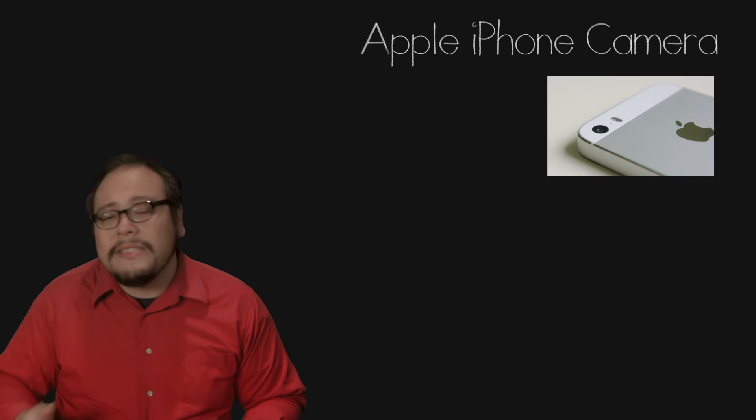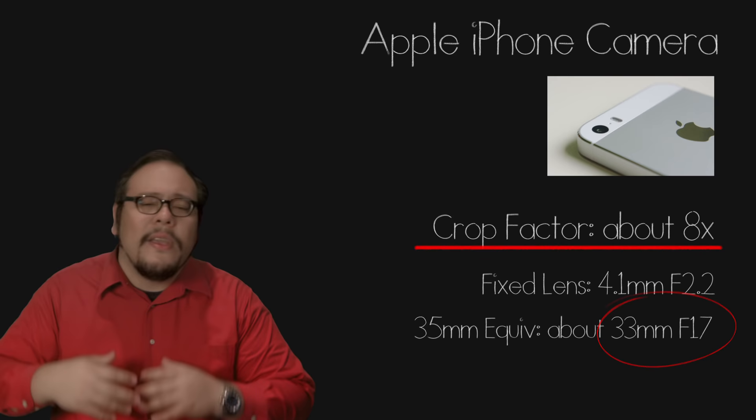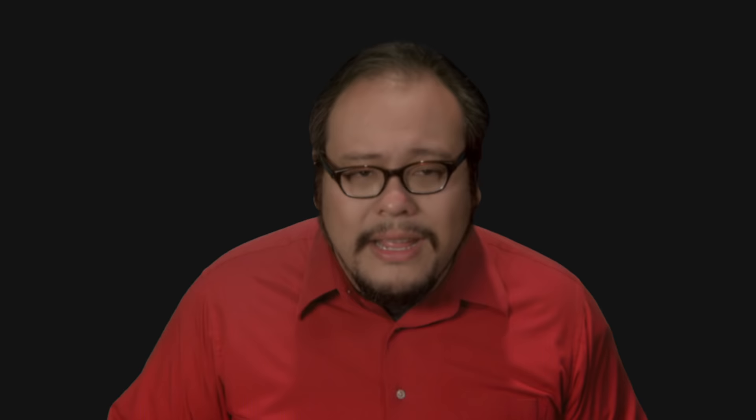If we carry this to the extreme, this is why your cell phone camera with its micro sensor can't produce the same kind of creamy shallow depth of field images that a full frame camera can. Does that make these smaller sensors inferior? No, of course not. It just makes them different. Full frame sensors have a particular look and smaller sensors have another look. That's all it is.